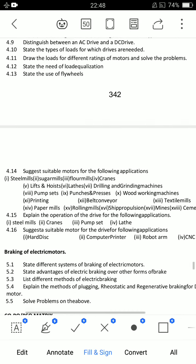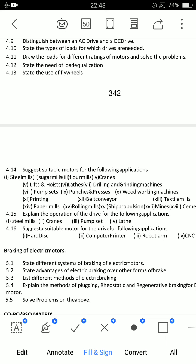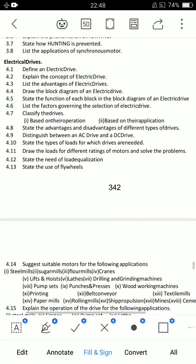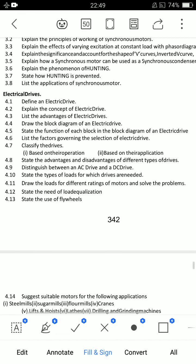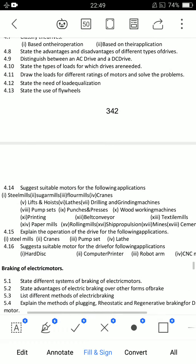Next chest, draw the loads for different ratings of motors. And next, explain the operation of the drive for the following application. 4.15. Let's take a look at this. And electric drive is 80. 4.12 and 4.13 short CV. Difference between AC drive and DC drive. This is one short.